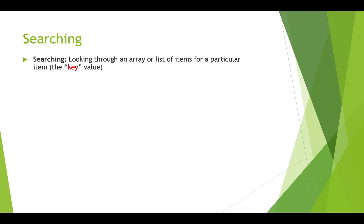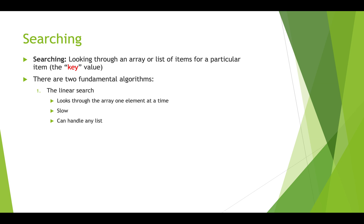When we want to search, what we're doing is looking through a set of items — an array or a list — to see if the list contains a particular item, and we call that the key value. There are two really fundamental algorithms. One is linear search, where we go through in a brute force manner, looking at every element one at a time. This can be slow, but it can handle any list. Binary search is a divide and conquer approach where we repeatedly divide the list in half and only look at the relevant half. This is much faster, but it only works if the list or array is sorted.